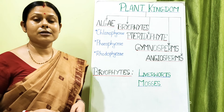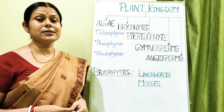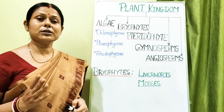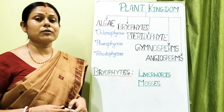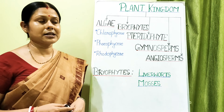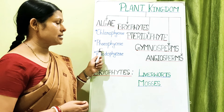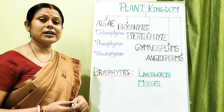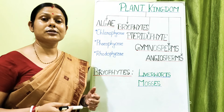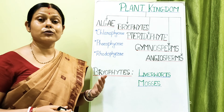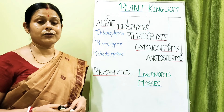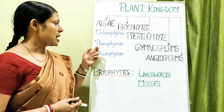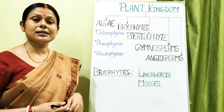The three classes are Chlorophytes, Phaeophytes, and Rhodophytes. Chlorophytes have the pigments chlorophyll a and chlorophyll b, just like land plants, which makes them green in color. Phaeophytes are called brown algae because they contain chlorophyll a along with chlorophyll c.